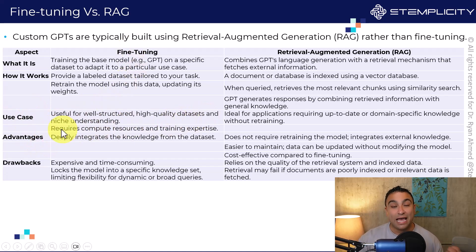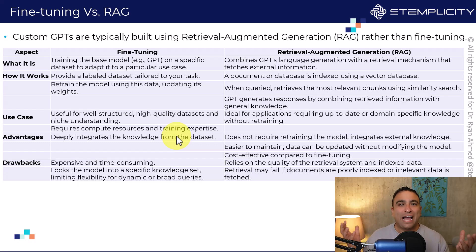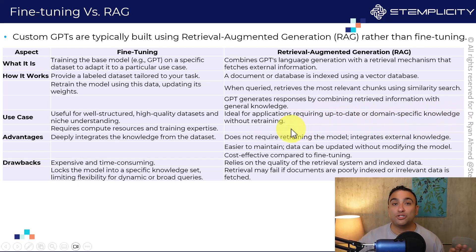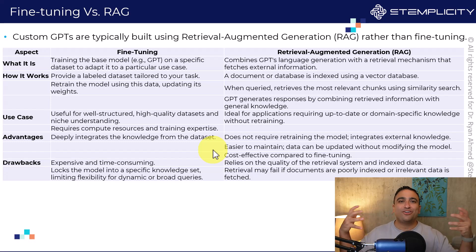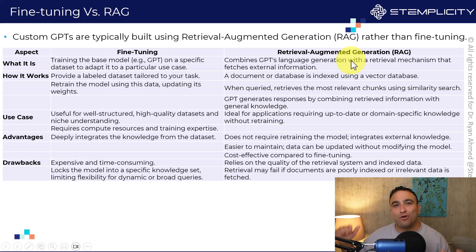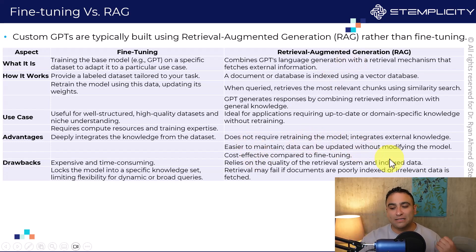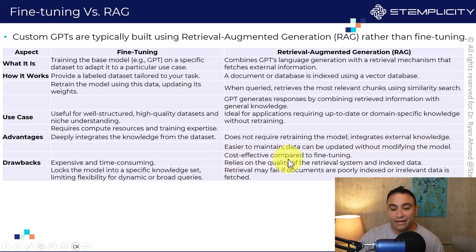Fine-tuning is useful for well-structured, high-quality datasets and niche understanding, but it requires computational resources, GPU provisioning, and training expertise such as running gradient descent. RAG is ideal for applications requiring up-to-date or domain-specific knowledge without retraining. Fine-tuning deeply integrates knowledge into the model's weights — all information is embedded inside the brain. RAG is more ad hoc: the brain stays the same, we just augment it with a database. RAG doesn't require retraining, integrates external knowledge, is easier to maintain, and is more cost effective.